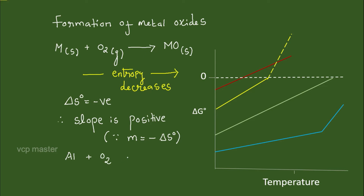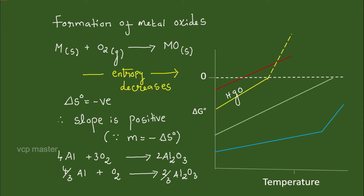For example, four moles of aluminium combine with three moles of oxygen, so you divide the whole equation by three. In the graph, there is a sudden change in slope for some lines — for instance, the yellow line for mercury oxide changes slope at its boiling point, where solid mercury oxide becomes gas. Similarly, magnesium oxide shows a slope change at its melting point. Thus, for most metal oxide formations, the slope is positive — it goes upward.